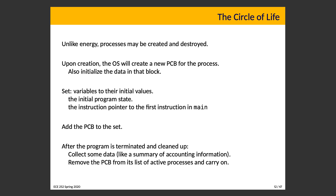Processes have a circle of life. Unlike energy, processes may be both created and destroyed. Upon creation, the operating system creates a new process control block for that process and initializes its data — sets variables to their initial values, sets up the initial program state, and moves the instruction pointer to the first instruction in main. The PCB is then added to the set. After the program terminates, accounting information can be collected, the PCB is removed from the list of active processes, and resources are cleaned up.